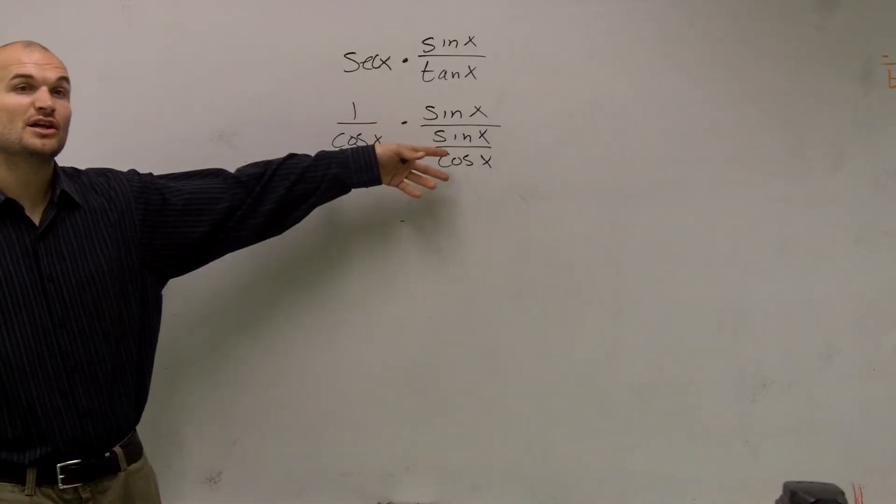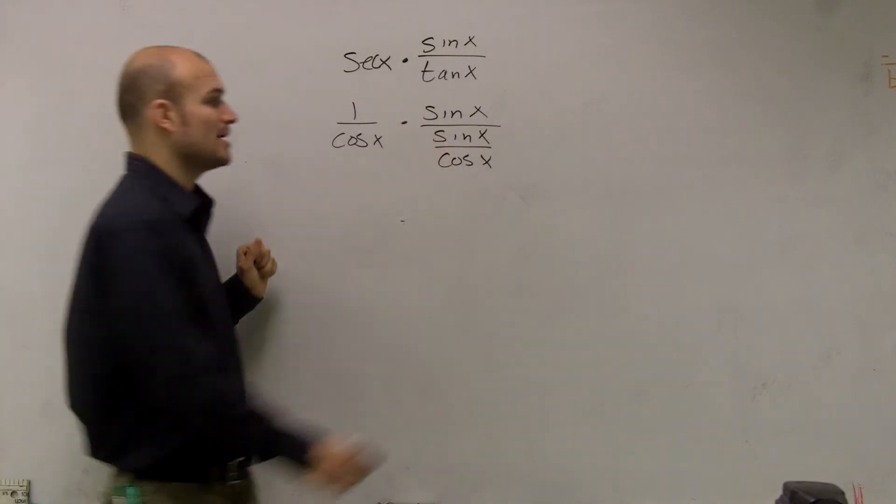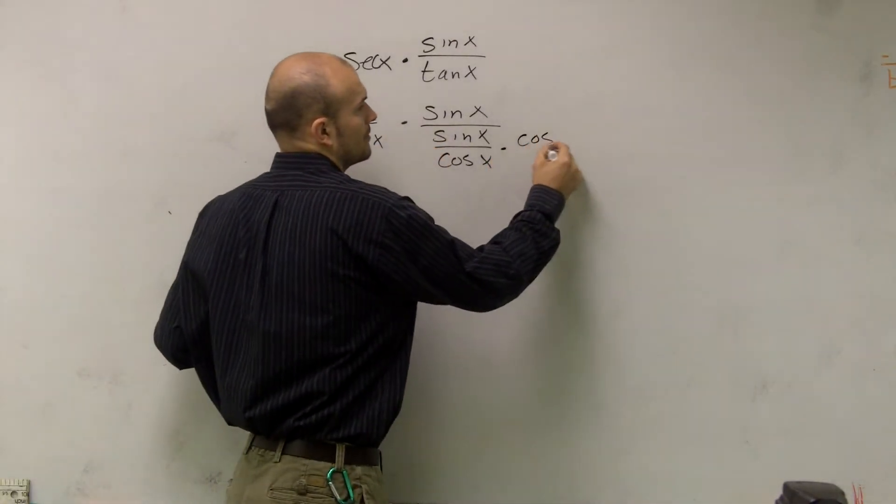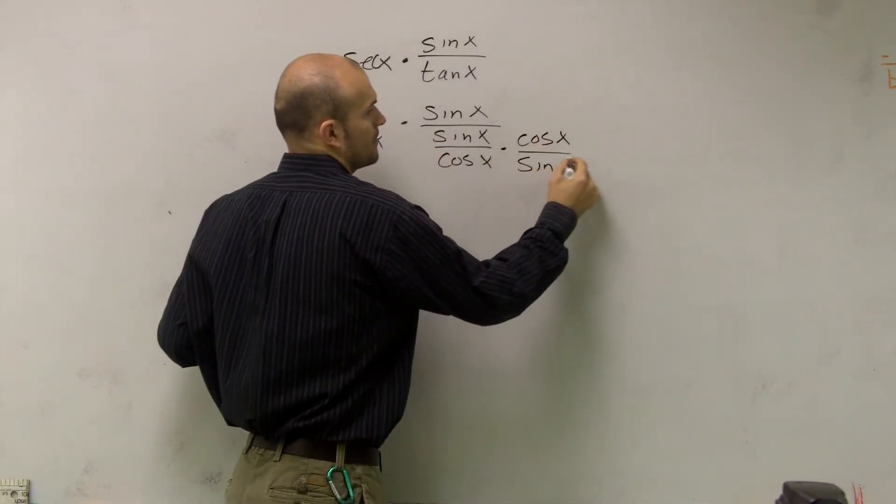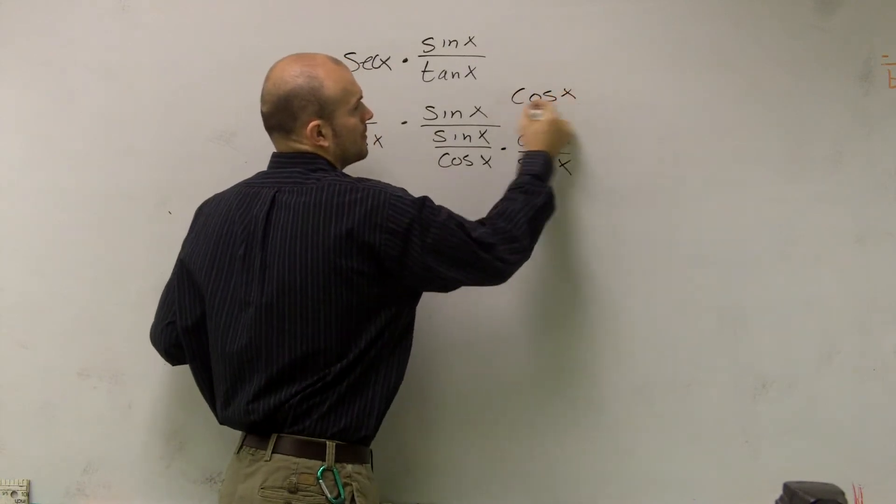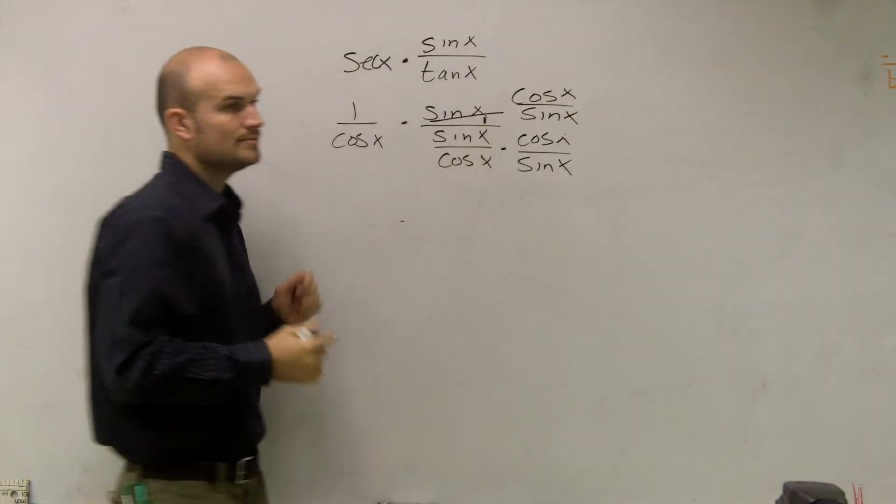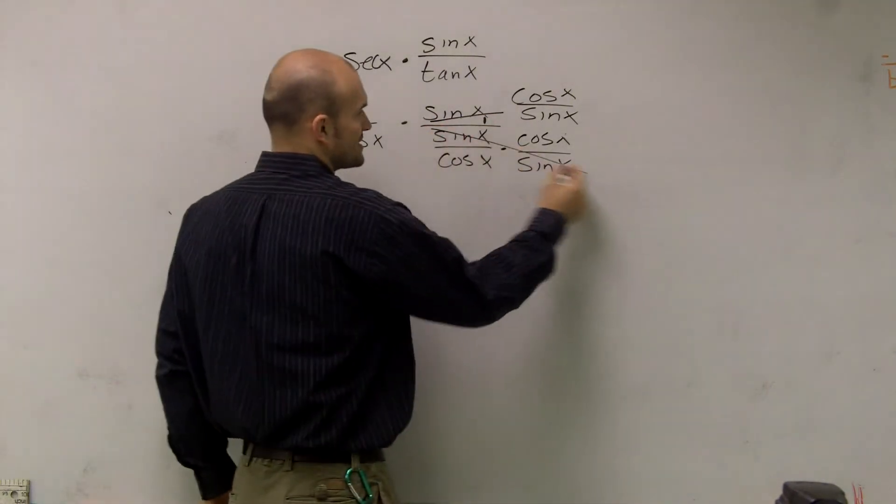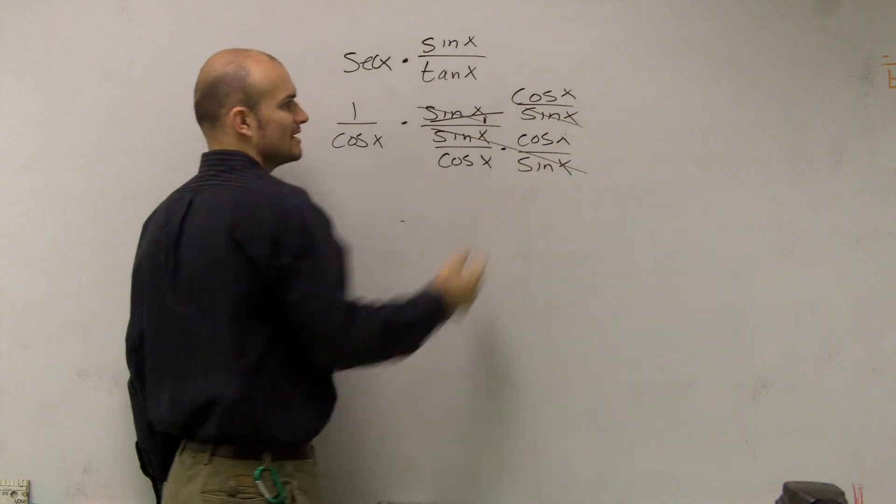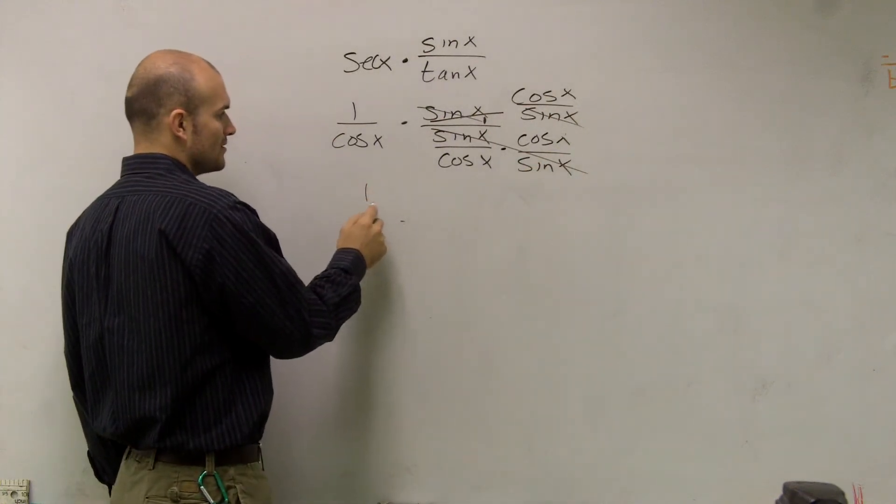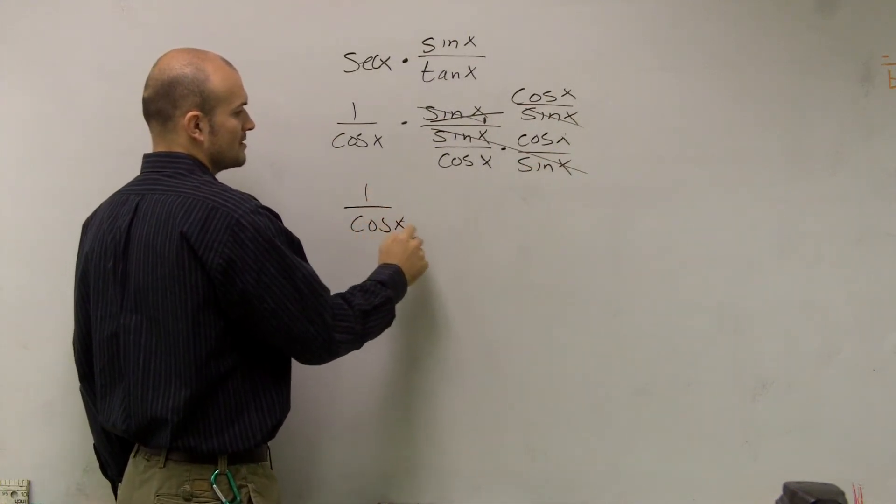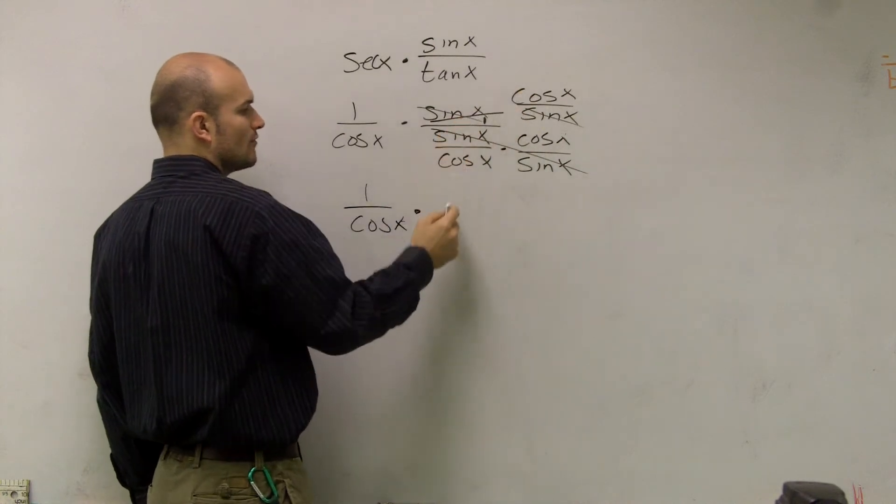Now I have a fraction divided by another fraction, I can get rid of that by multiplying by the reciprocal. Remember that's over 1, so this is going to cancel out, and so are my sines going to cancel out. So I'm left with 1 over cosine of x times cosine over 1.